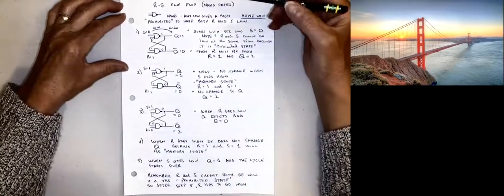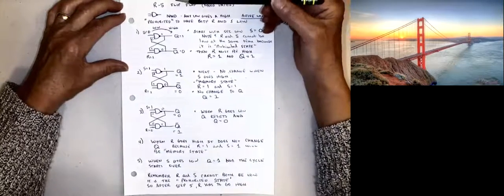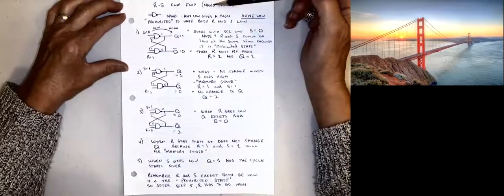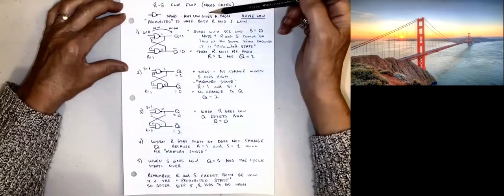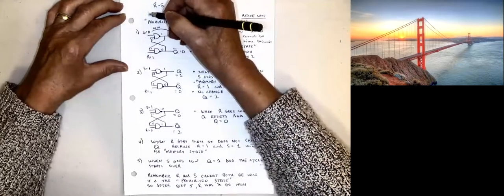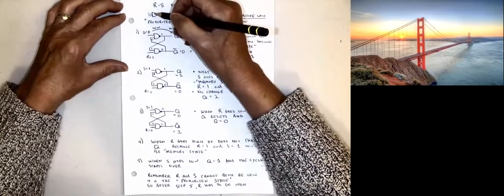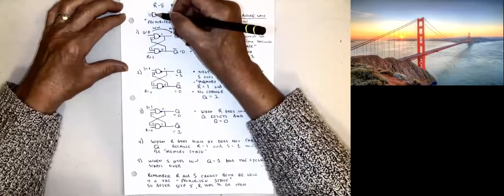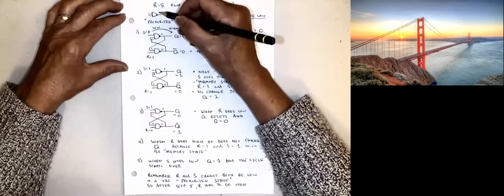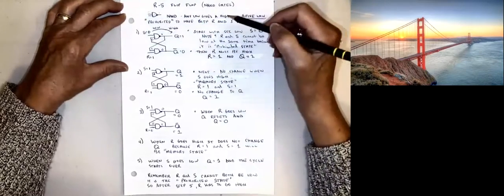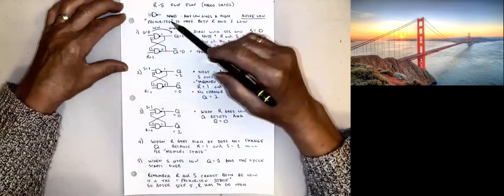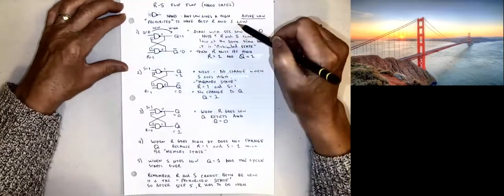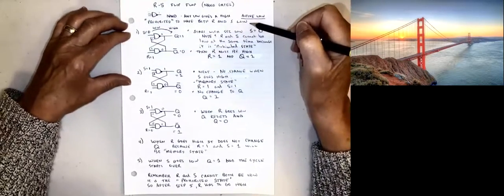For this next flip-flop, I'm going to use NAND gates. If we look at this NAND, the jingle to remember is: any low gives a high. So if I have one low and one high on the inputs, we'd have a low inside and then a high out. Any low gives a high — we call that active low, which means we can't have both R and S low at the same time. That would be the prohibited state.